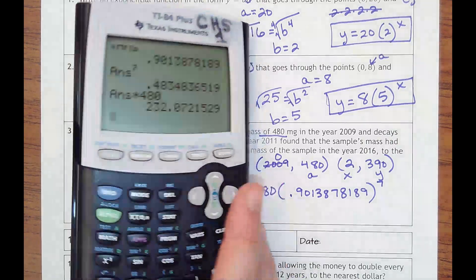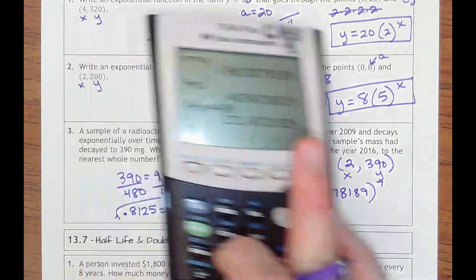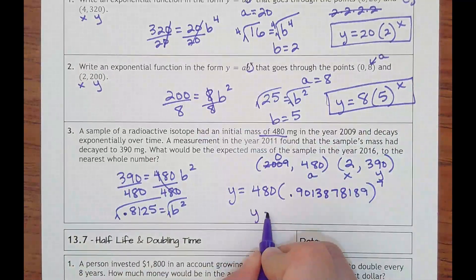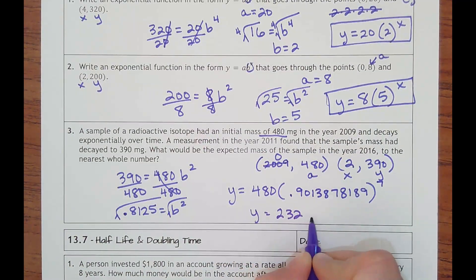And so it said to the nearest whole number, so that would be 232. And that was in milligrams.